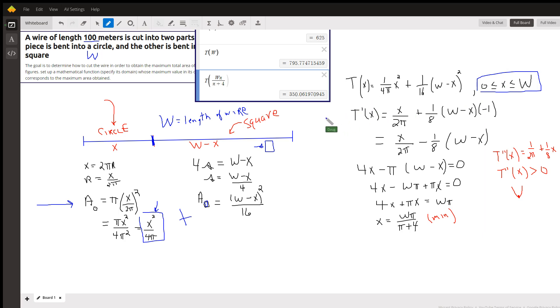Okay, if we take the derivative of that function, set it equal to 0, we'll have the critical numbers, some relative maximums and or minimums. So T prime is x over 2π plus 2 times 1/16th is 1/8 to reduce the exponent by 1.